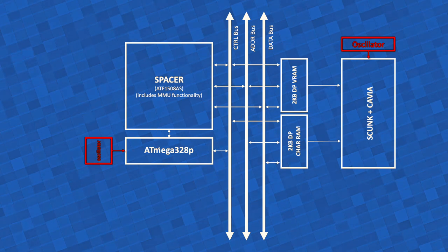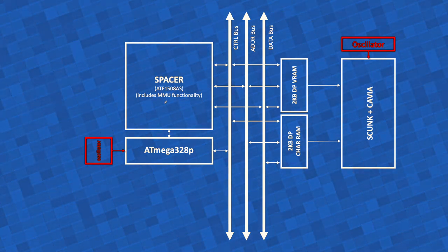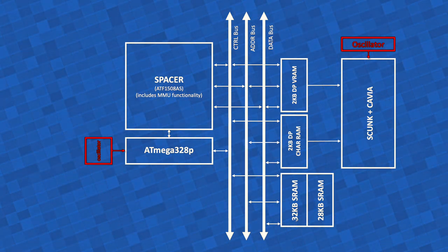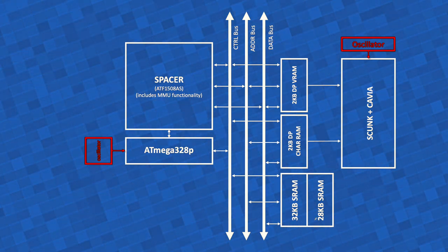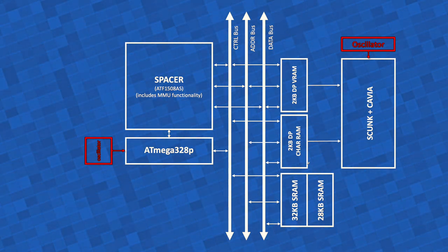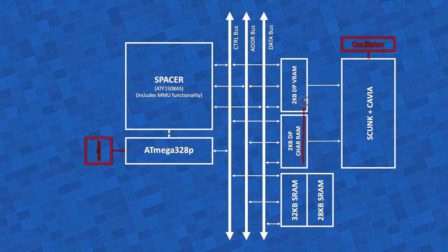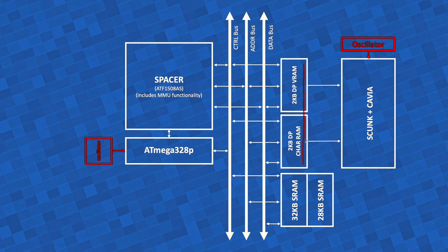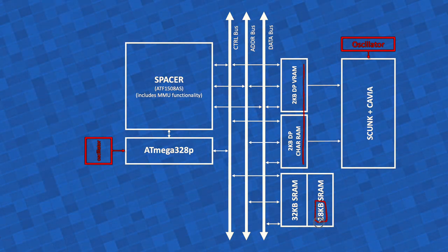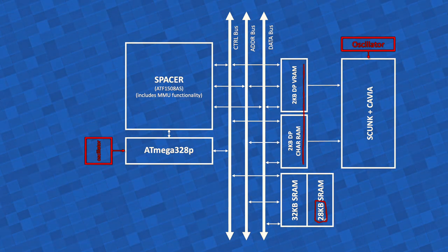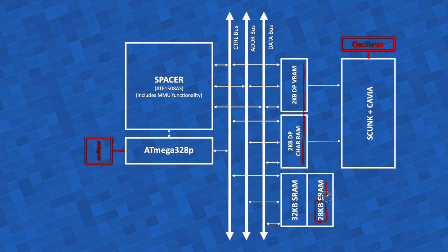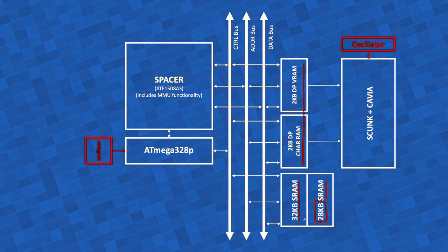In addition to the I/O controller and Spacer, we need some system memory. We are going to use two 32-kilobyte SRAM chips. Out of which, in the second chip, we are only going to use 28 kilobytes, because the memory map requires four kilobytes for the dual-ported video and character memories. So we can't address the second 32-kilobyte block fully — but it's still cheaper and more efficient to use a 32-kilobyte chip.